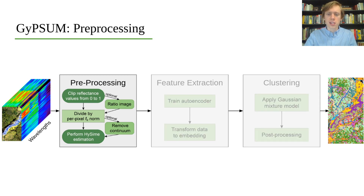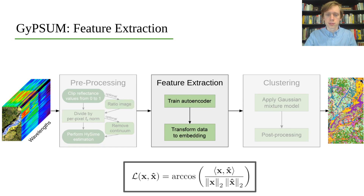Our preprocessing method is informed by geological spectroscopy preprocessing tools typically used by experts. In our feature extraction phase, we train an autoencoder with a latent embedding size of the signal subspace dimension, as estimated by HiSIME. Instead of the typical mean squared error reconstruction loss, we use the spectral angle between the input and reconstruction.